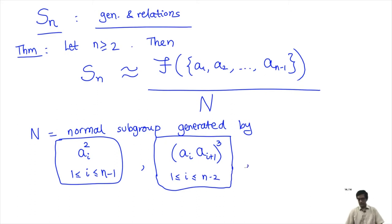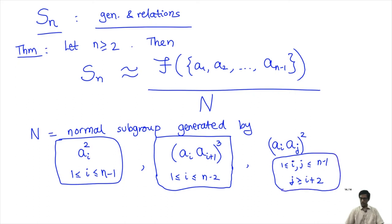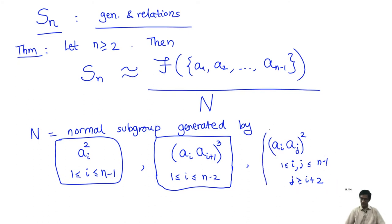The third type of relation, which we did not have in the case of S3 because it is too small, is of the form (ai · aj)². Here j cannot be i+1; j must be at least i+2, meaning two or more steps away from i, with both i and j between 1 and n−1.